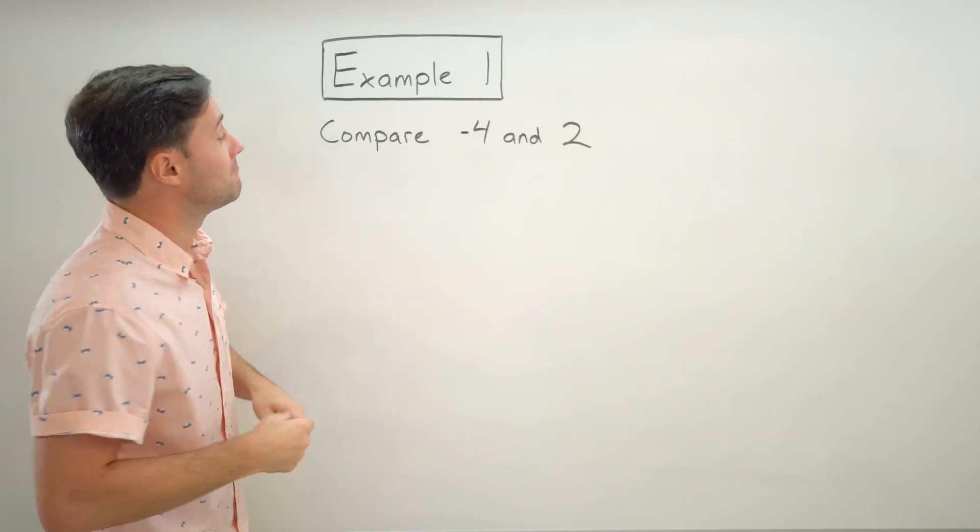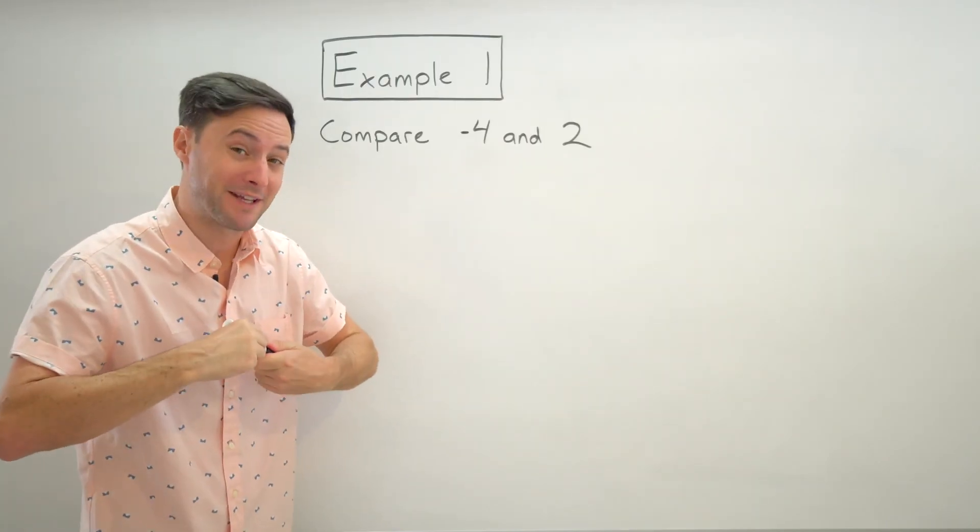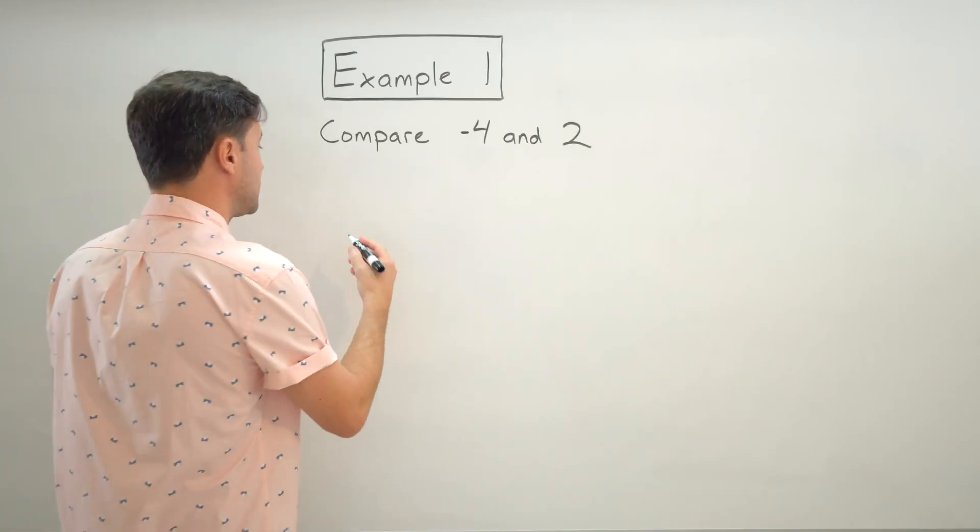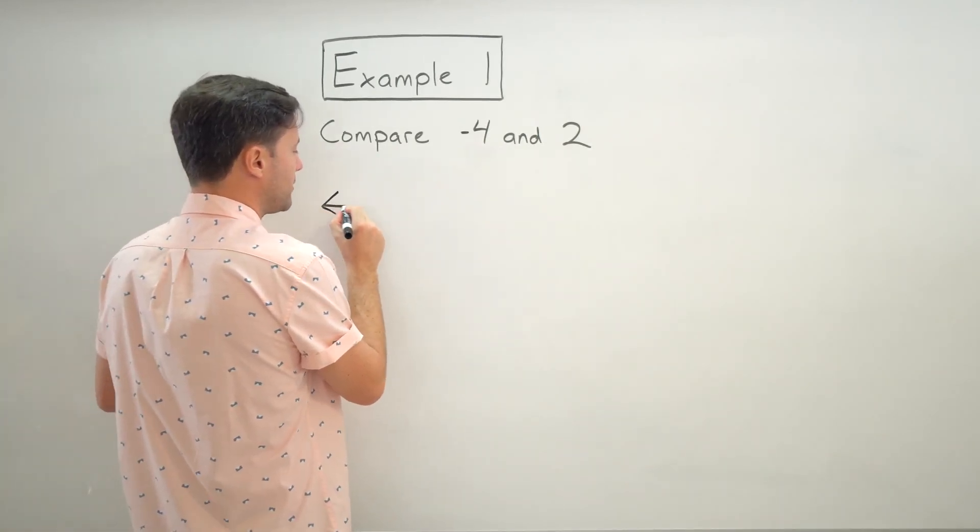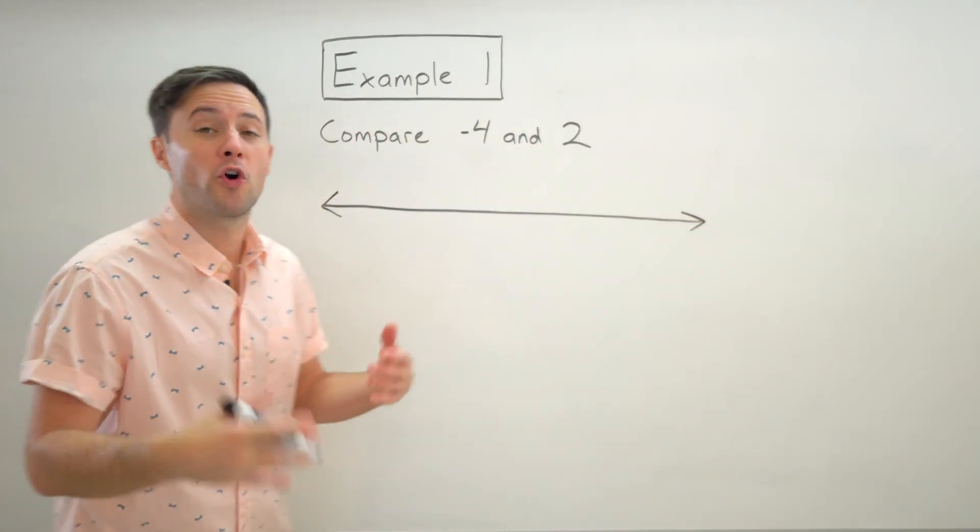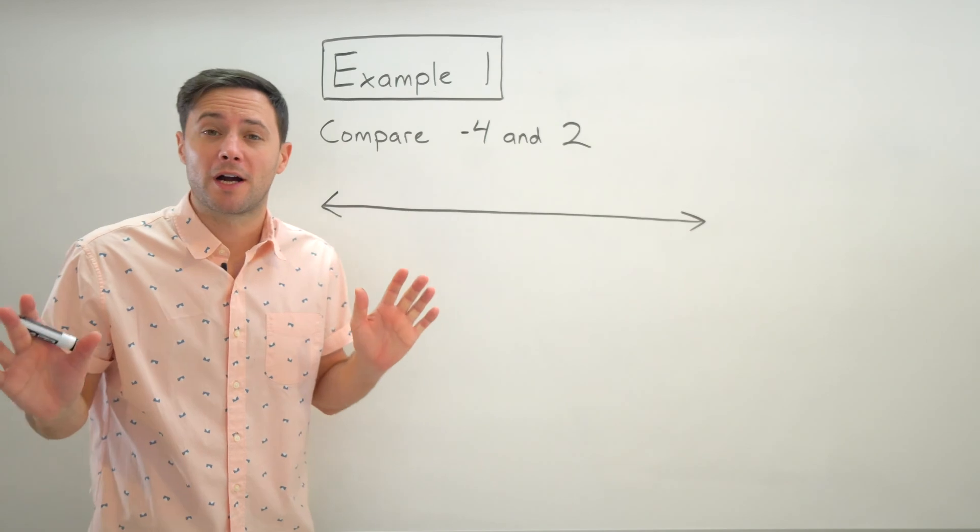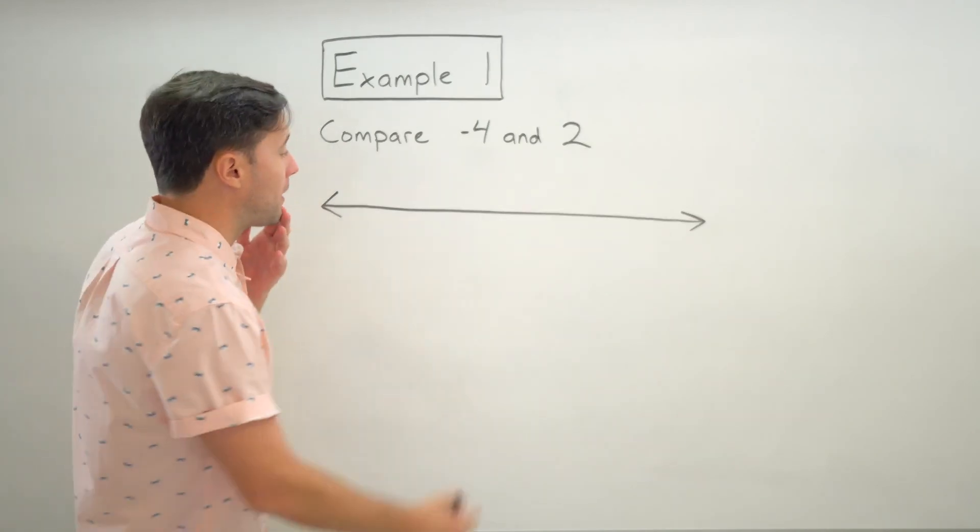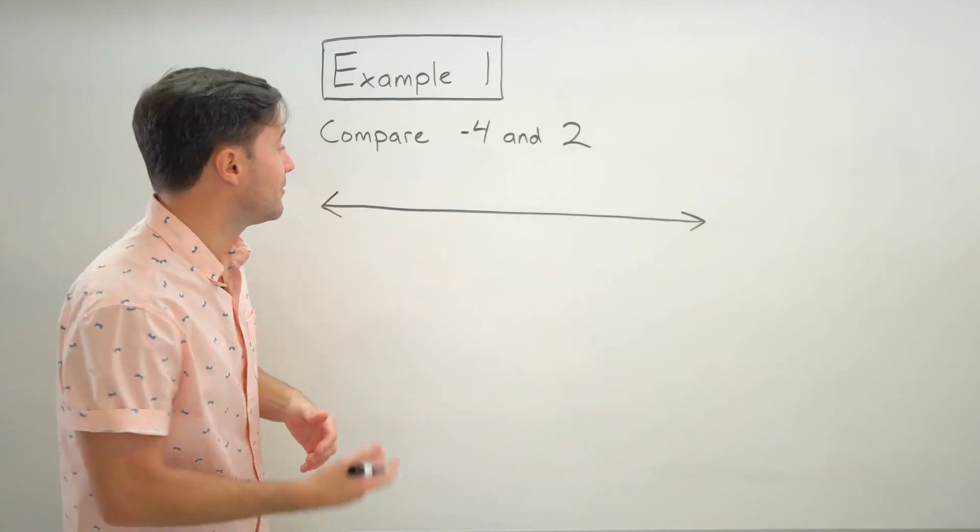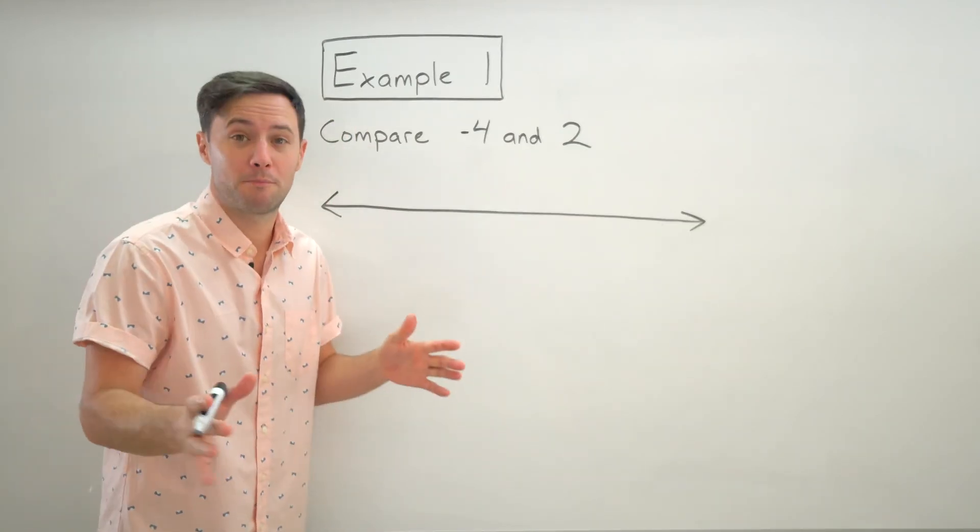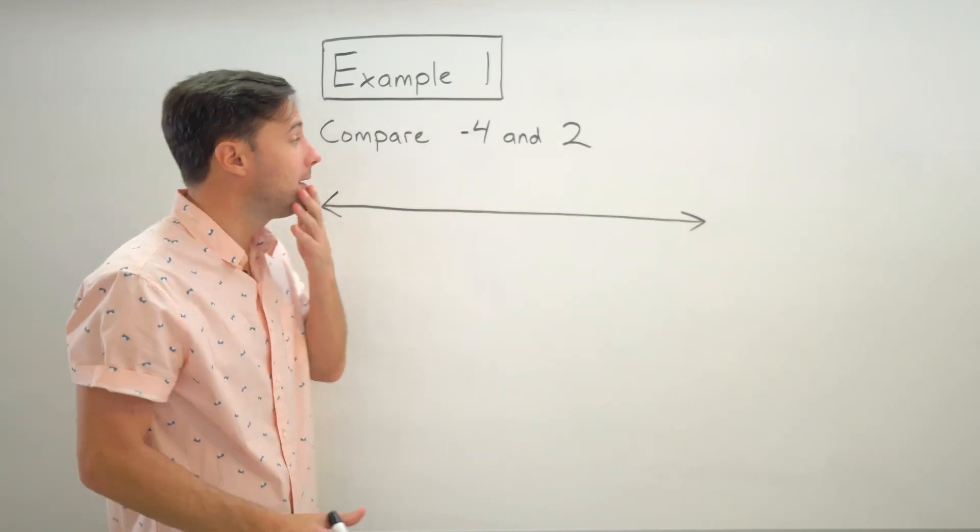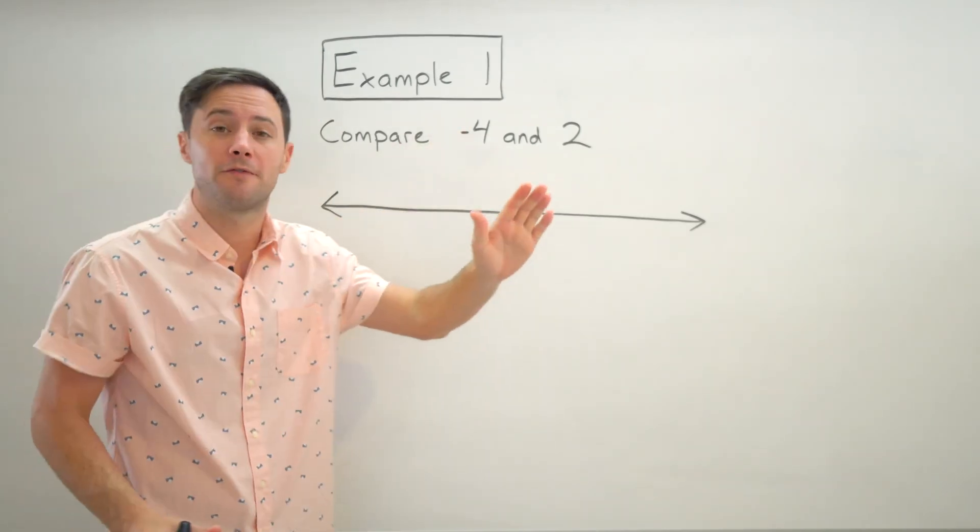Compare negative four and two. So naturally, you probably guessed, I'm going to use a number line to help me figure this out. So I'm just going to start with my arrows at both ends, which is really important. And now normally, if you're not super comfortable with drawing number lines, you might want to put zero right in the middle just to help kind of orientate yourself. But if you are pretty comfortable, you could pick one of these values. So for me, I'm going to start with negative four.